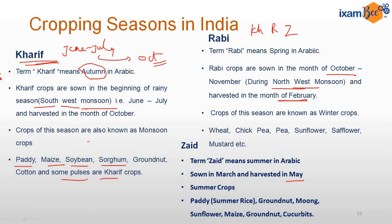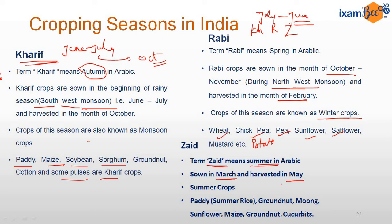The agriculture year in India starts from July and ends in June — this may be asked in the exam. For the financial year it is April to March. Rabi crops are also known as winter crops since they are grown in winter. Examples of Rabi crops are wheat, chickpea, field pea or garden pea, sunflower, safflower, mustard, and potato. Zayed in Arabic means summer; Zayed crops are sown in March and harvested in May.